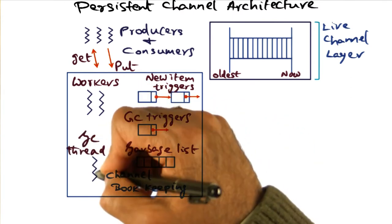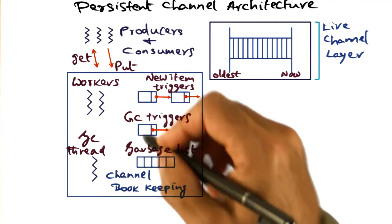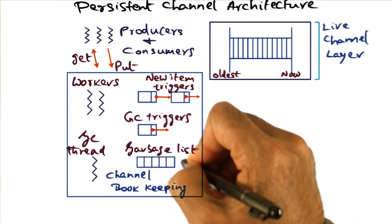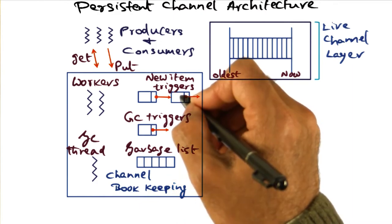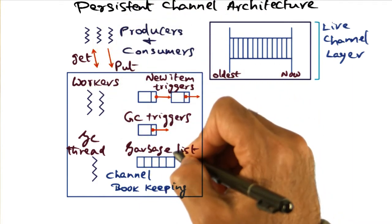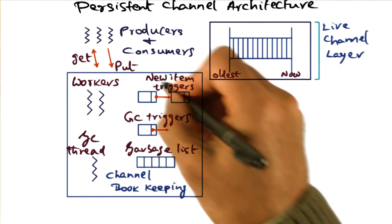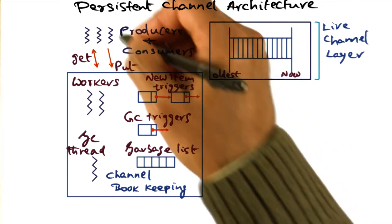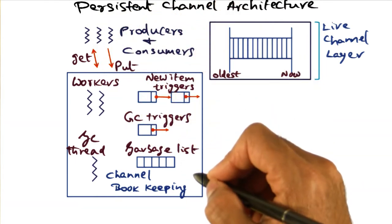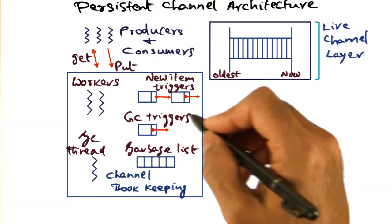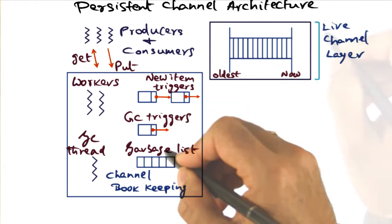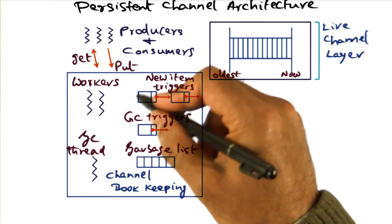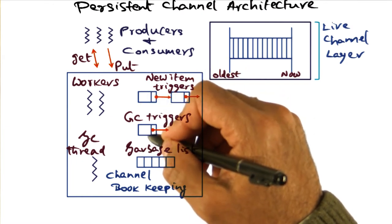There is another garbage collection thread that is responsible for periodically cleaning up all the garbage that has been created by throwing away stuff that is no longer relevant for this computation. This is all the channel bookkeeping happening under the covers in support of an application that is using the PTS library. But there is a lot more to it than just dealing with live data and data that has to be garbage collected or thrown away.